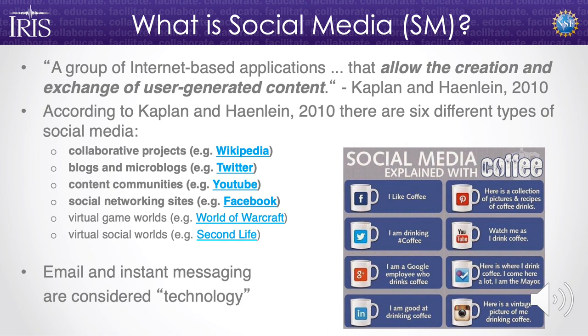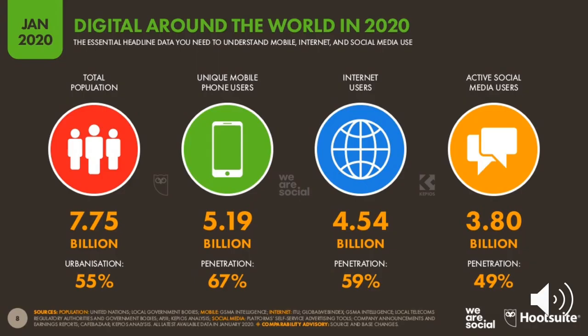Now getting into social media. What exactly is social media? It's an internet-based application that allows, importantly, the creation and exchange of user-generated content. There are six different kinds of social media; we're going to concentrate on four: collaborative projects like Wikipedia; blogs and microblogs like Twitter; content communities and social platforms like YouTube; and social networking sites like Facebook. Social media is important because it's found everywhere — it's ubiquitous. There are almost eight billion people in the world, almost five billion are internet users, and almost four billion are active social media users. This is an opportunity for scientists to talk to people all across the world.